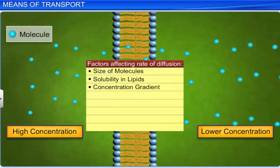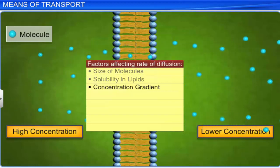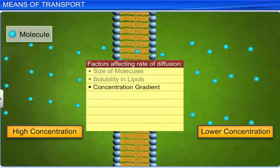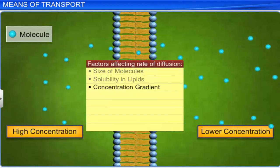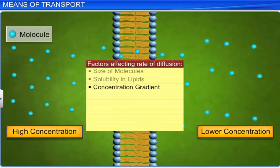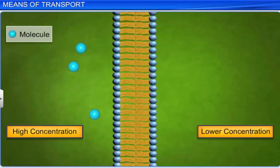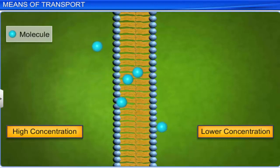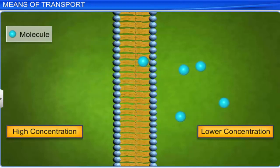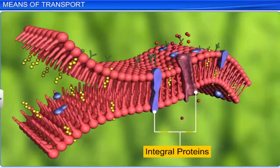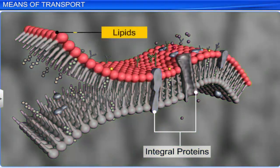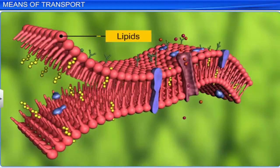Of these three factors, the concentration gradient is a must for diffusion to even take place. As for size, the bigger the molecules, the slower the rate of diffusion. And since all membranes are made up of lipids, lipid-soluble substances diffuse faster.